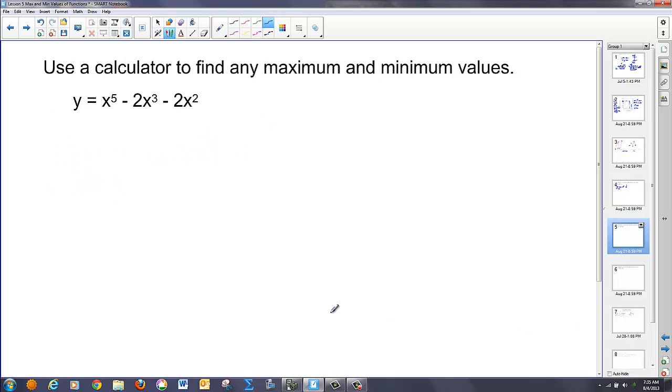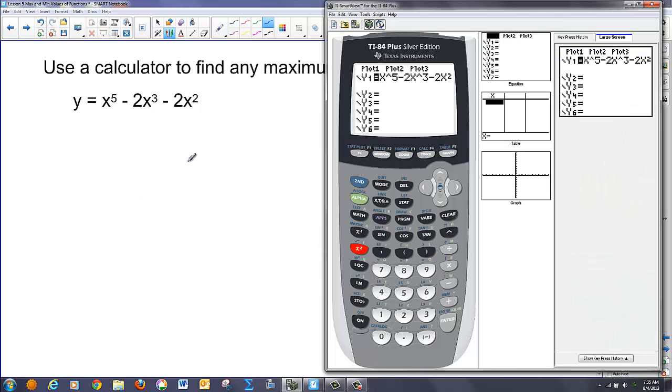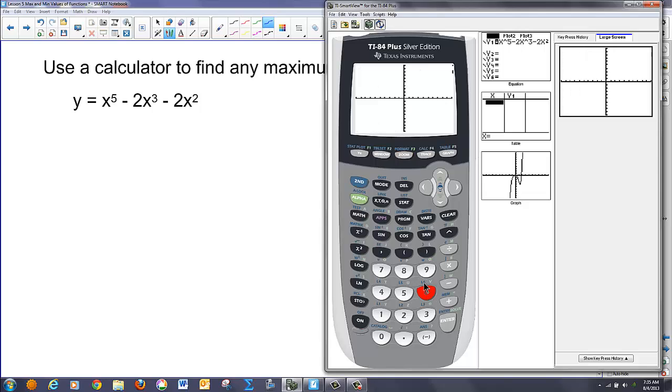We're going to move to a new equation. Here's our curve x to the fifth minus 2x cubed minus 2x squared. I'm going to graph that in the standard window. You'll notice this time it seems to go down as I move to the left and up as I move to the right. In this case, we have a relative maximum at this point up here, and a relative minimum at this point here.